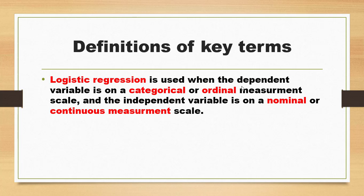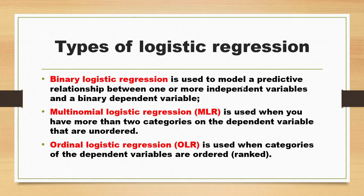The types of logistic regression vary according to the types of variables involved. Binary logistic regression models a predictive relationship between one or more independent variables and a binary dependent variable. Multinomial logistic regression is used when you have more than two unordered categories on the dependent variable. Ordinal logistic regression is used when the categories of the dependent variable are ordered or ranked.